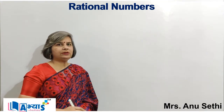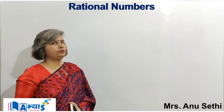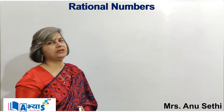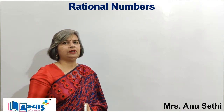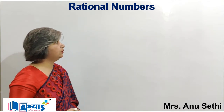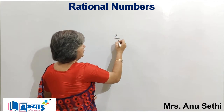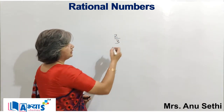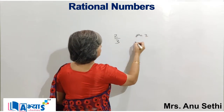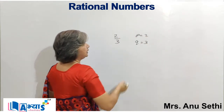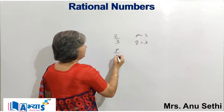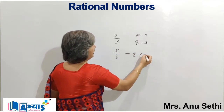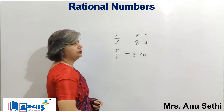Rational numbers. Now I am going to discuss the concept of rational numbers. Rational numbers means any number which can be represented in the form of p by q, where q is not equal to 0. For example, 2 by 3 is a rational number because here p can be represented as 2 and q can be represented as 3, and p by q is a rational number where q is not equal to 0, and we have seen that q equals 3, which is not equal to 0.